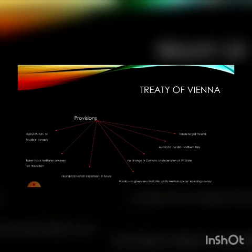Next provision: Austria to control Northern Italy. The part of Northern Italy which had once become part of Napoleon's rule was now taken by Austria, and they established their presence there to keep an eye on France.